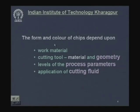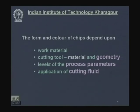The form and color of chips depend upon the work material — brittle materials produce discontinuous or dusty chips, while ductile materials produce continuous chips. It also depends on cutting tool material and geometry: a chemically inert tool material yields better chips, while a sticky or chemically reactive tool yields poorer chips, and rake angle plays an important role. Process parameters such as cutting velocity and feed also affect chip form and color, as does the application of cutting fluid, which provides both cooling and lubrication.